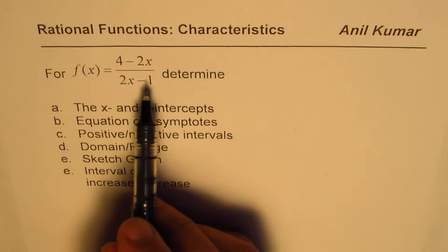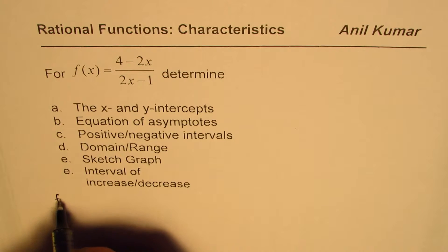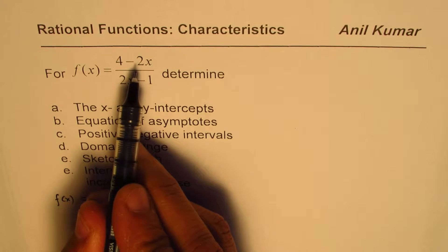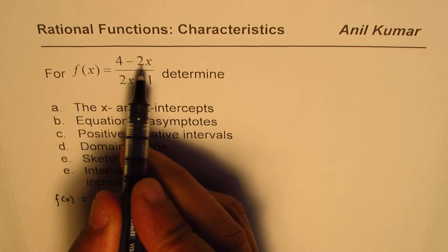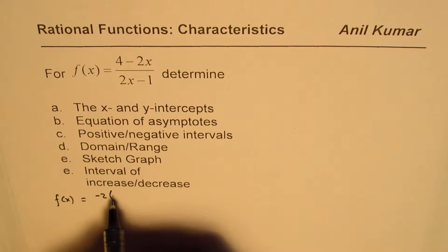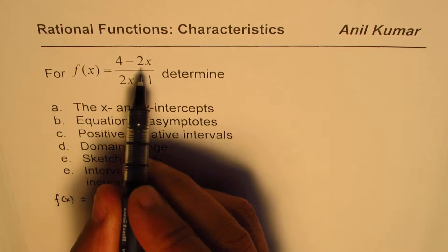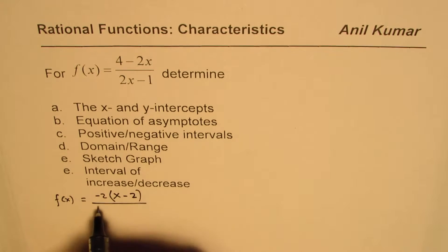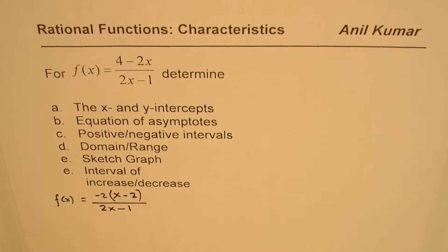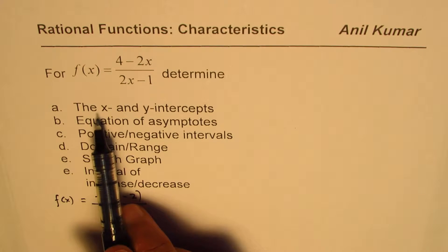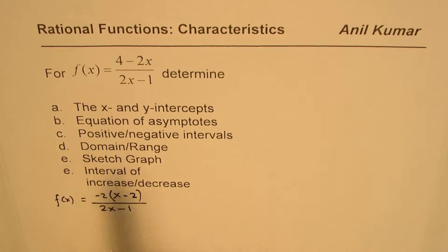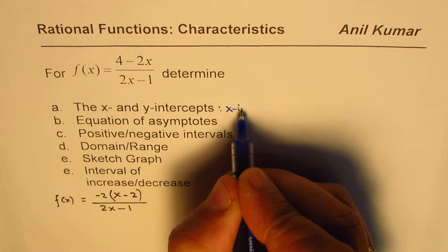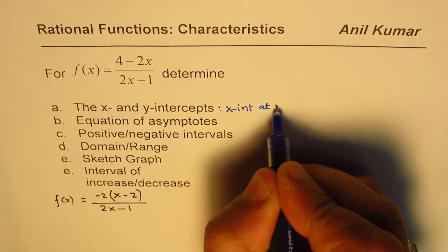Let me begin by factoring the numerator so the intercepts will be very clear. f(x) can be written by rearranging as minus 2 plus 4, then factoring out minus 2 to get minus 2 times (x minus 2), with denominator 2x minus 1. The numerator is 0 at x equals 2, so we get the x-intercept at x equals 2.